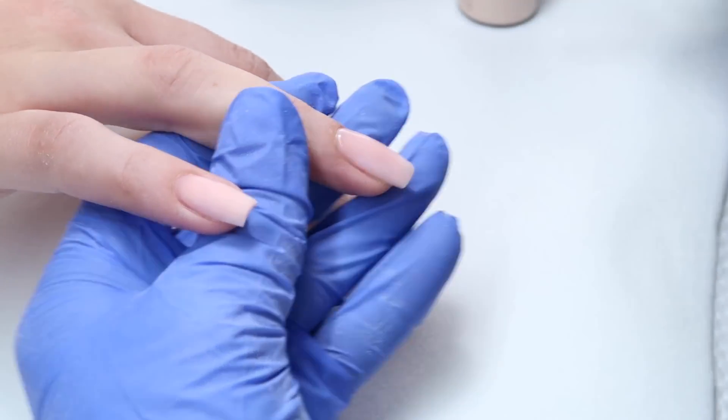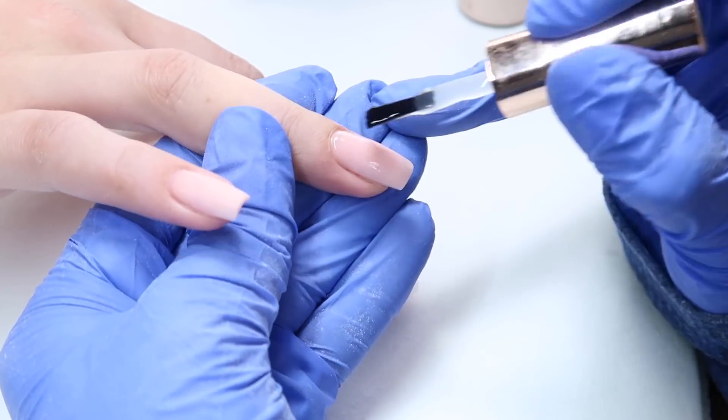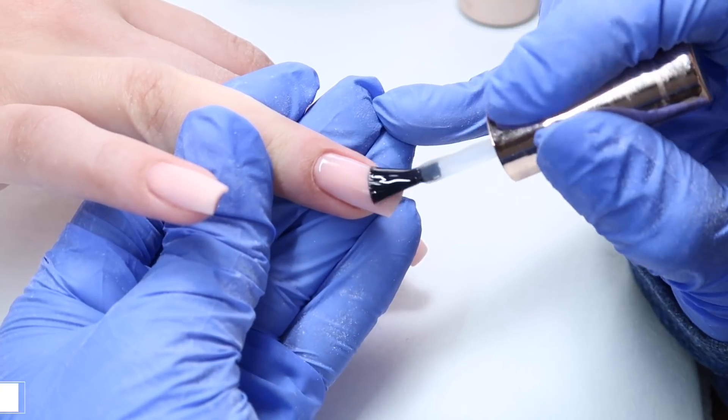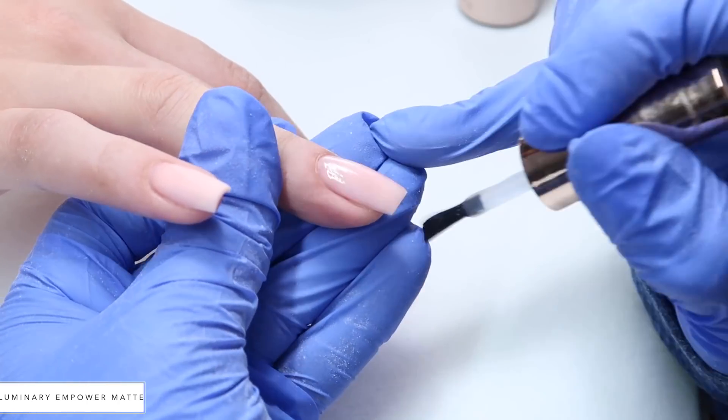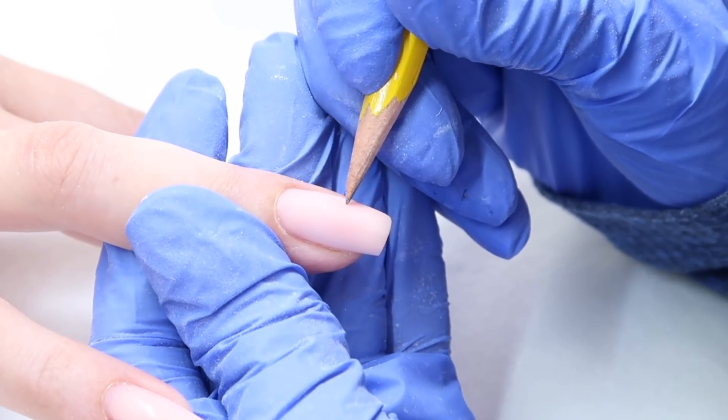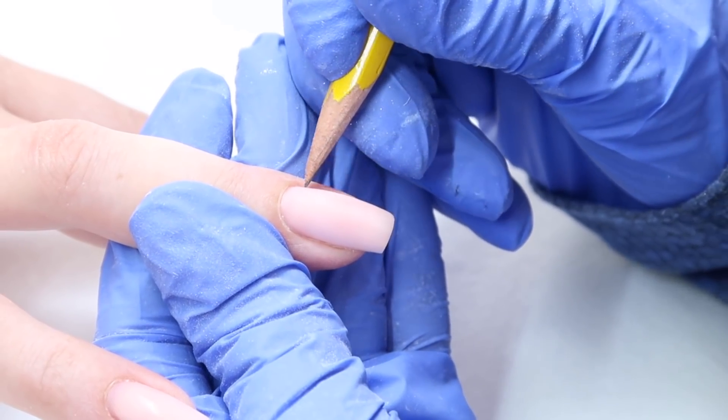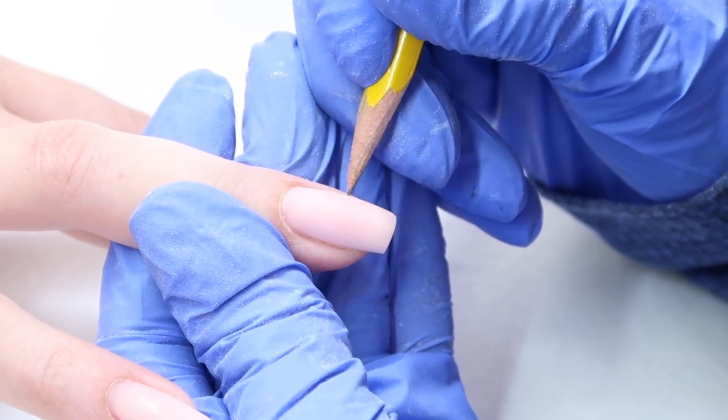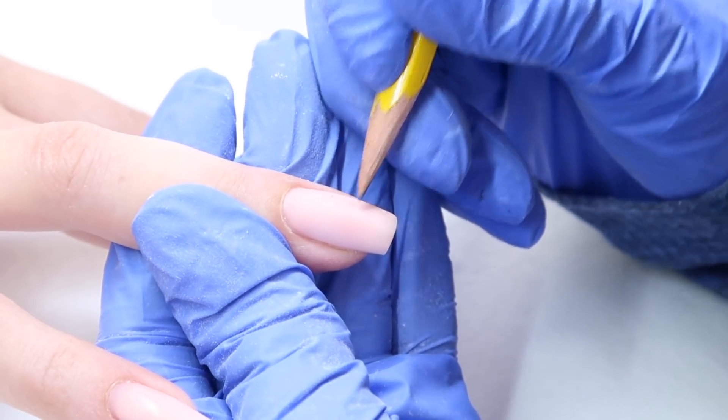After I'm done finished filing, I like to cleanse the nails really well like I did at the very beginning. Now I'm coming in and I'm applying my Luminary matte top coat on just the ring finger.